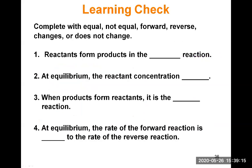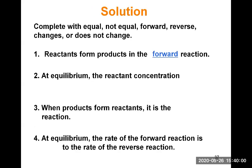Let's do a learning check to verify our understanding of the vocabulary. Complete the blanks using: equal, not equal, forward, reverse, changes, or does not change. Statement one: reactants form products in the blank reaction. The answer is forward — reactants on the left forming products on the right is the forward reaction, the usual way we've seen chemical equations written.